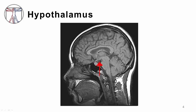Fever is a normal physiologic phenomenon regulated by the thermoregulatory center of the hypothalamus, which sits below the thalamus just above the brain stem. This center receives input from cold and warm thermal receptors located throughout the body and generates output responses that either conserve or dissipate body heat. The variation in body temperature is controlled by the release of inflammatory cytokines in the hypothalamus.